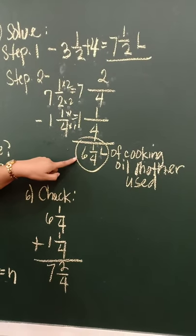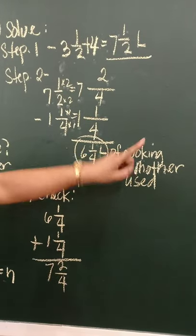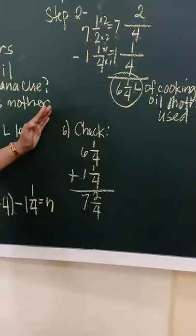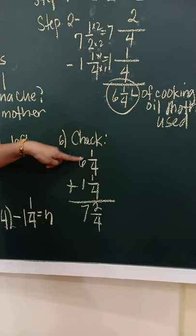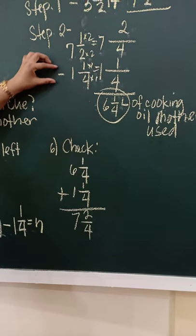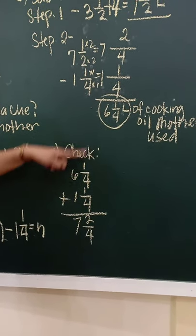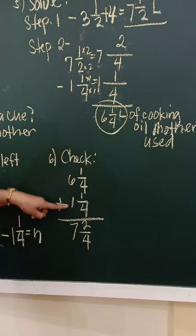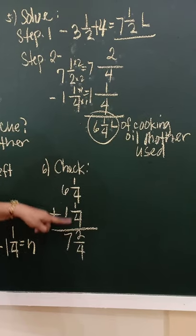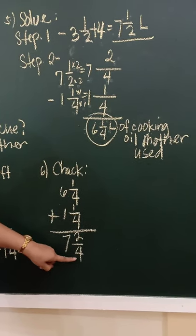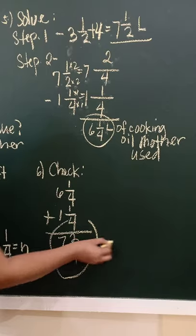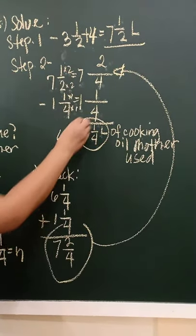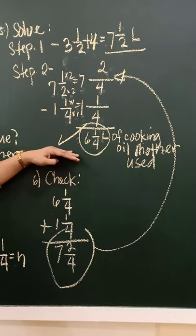So the final answer, or complete answer is six and one-fourth liters of cooking oil mother used in cooking. To check, just add the difference. Since this is subtraction, to check, use addition. Six and one-fourth, add it to one and one-fourth. So six plus one is seven. One plus one is two. Then just copy the denominator four. So seven and two-fourths. If it's equal to your minuend on top, it means your answer is correct. Six and one-fourth.